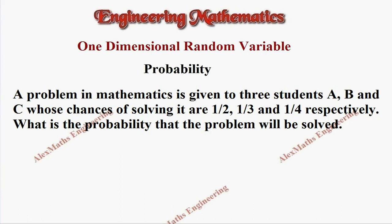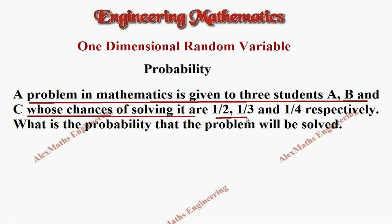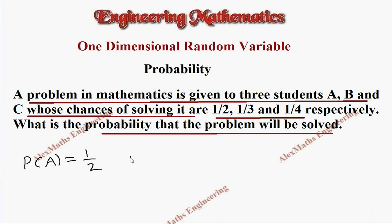Hi students, this is Alex. In this question, a problem in mathematics is given to three students A, B, and C, whose chances of solving it are 1/2, 1/3, and 1/4 respectively. What is the probability that the problem will be solved? Let's take the probability of A which is 1/2, probability of B is 1/3, and probability of C is 1/4.